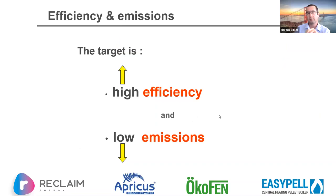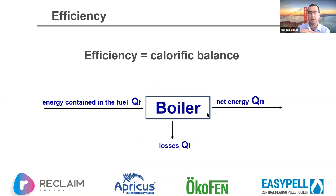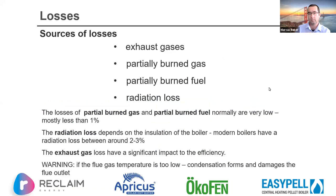The ultimate target is high efficiency and low emissions. Efficiency is measured by the calorific balance: how much energy is in the fuel minus the losses against the energy gain into the water. We lose energy through exhaust gases, through partially burnt gas and fuel, and through radiative losses. In an Ökofen context, partial burning is very low — less than one percent.